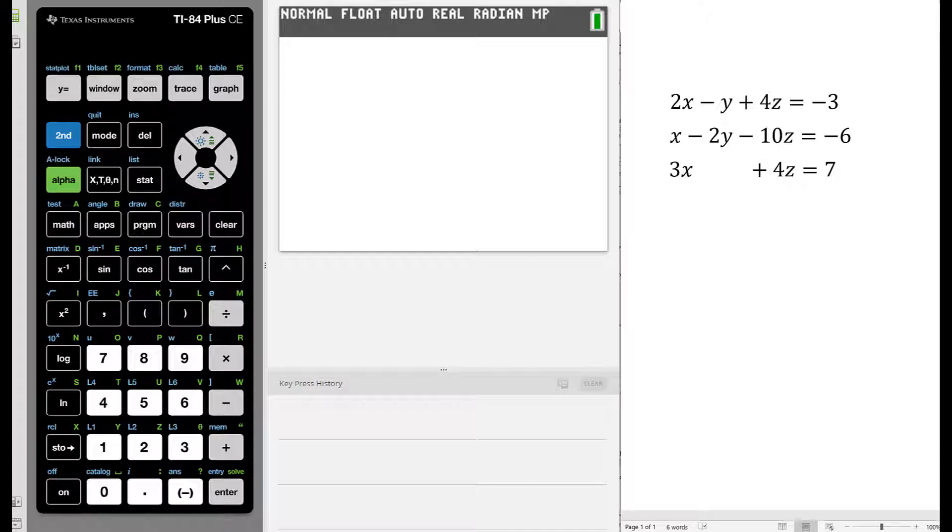It is 2x minus y plus 4z equals negative 3, x minus 2y minus 10z equals negative 6, and 3x plus 4z equals 7.